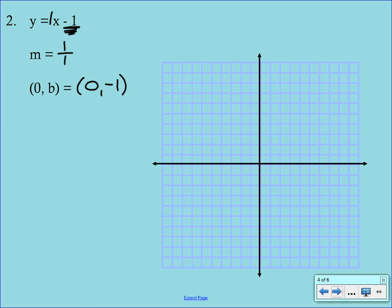To graph this, you plot your y-intercept, so (0, -1). From that point, we're going to go up 1, right 1. And just continue to do that. Up 1, right 1. Up 1, right 1. Up 1, right 1.